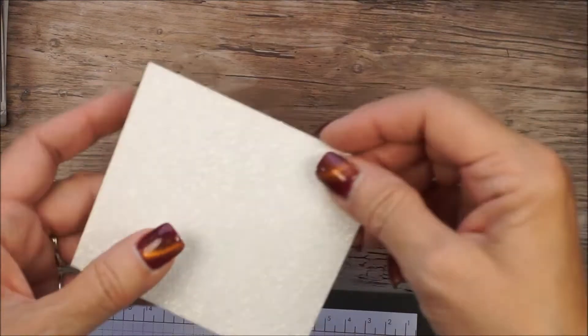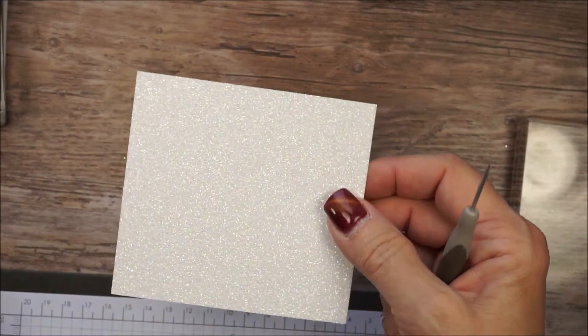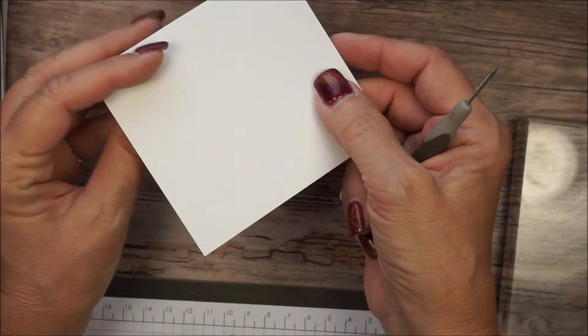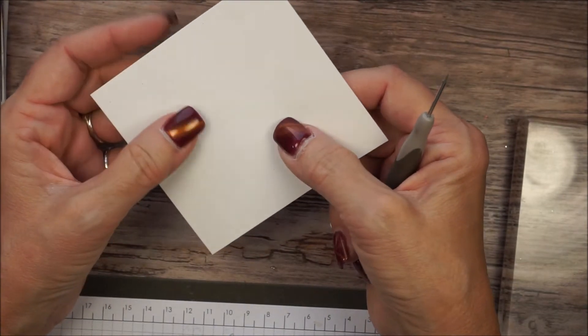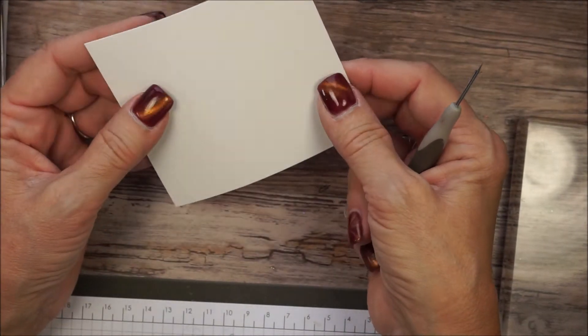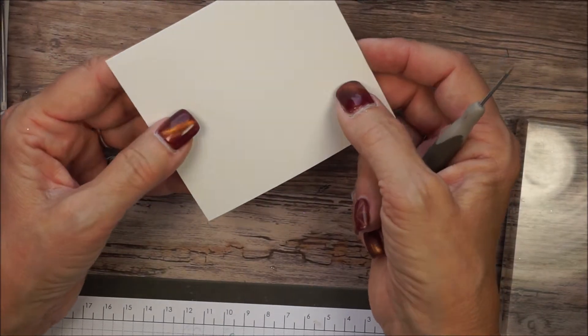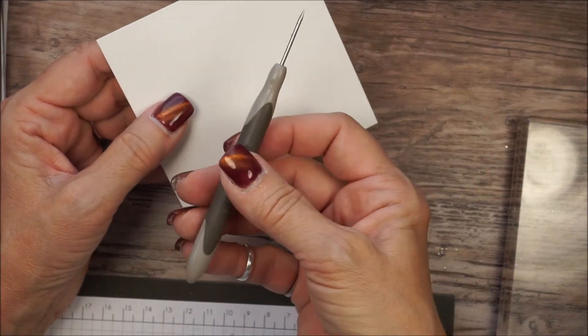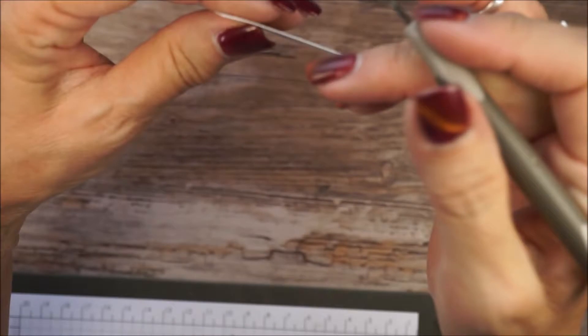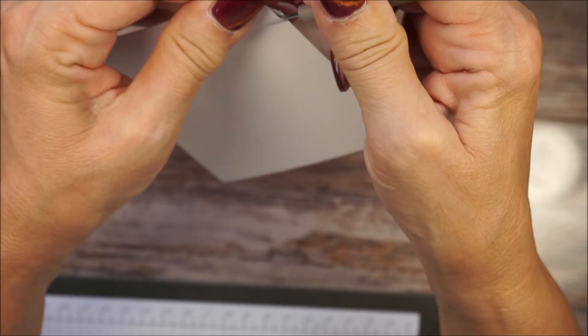The trick that I want to show you, whenever you're using those detailed framelits and glimmer paper, glimmer paper has a very waxy coating. It's a very stiff cardstock. When you run it through your big shot, it is very hard to get those details cut out unless you do this. Take your paper piercer. It'll take me a few seconds to get it started. I'm lucky. I already had a piece going.